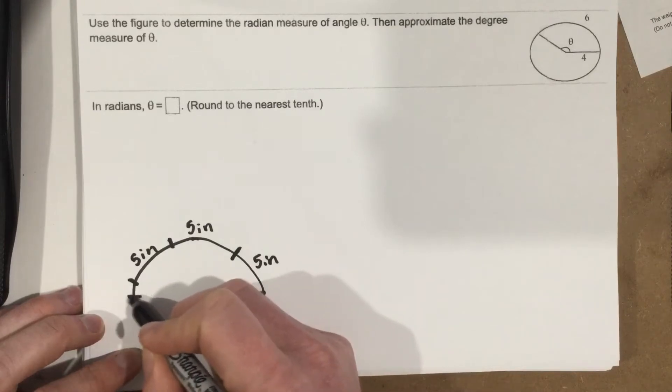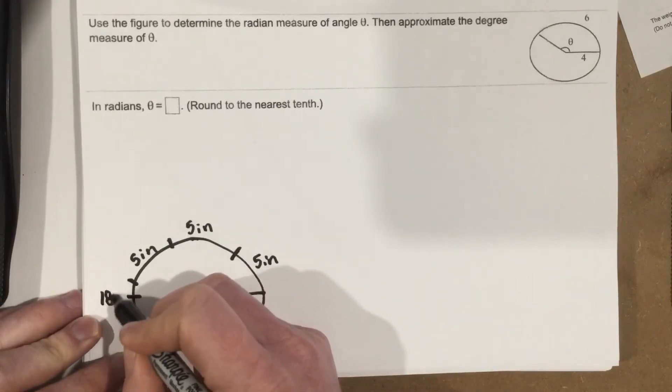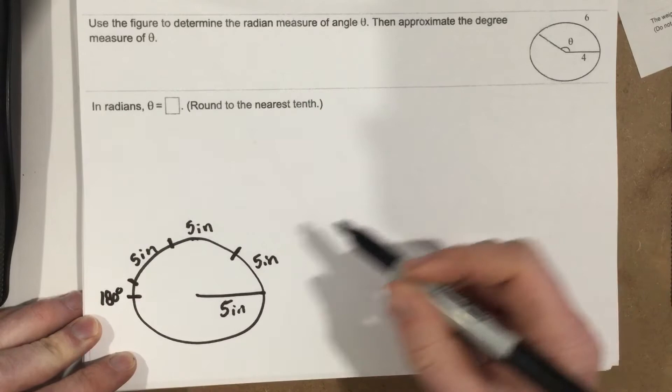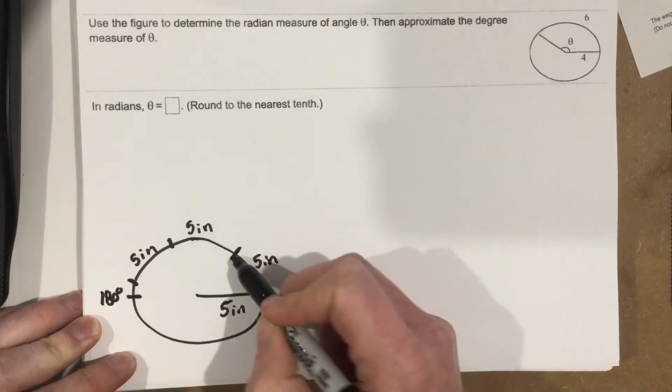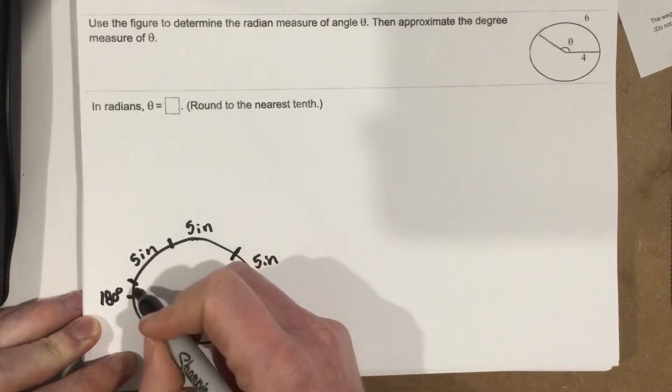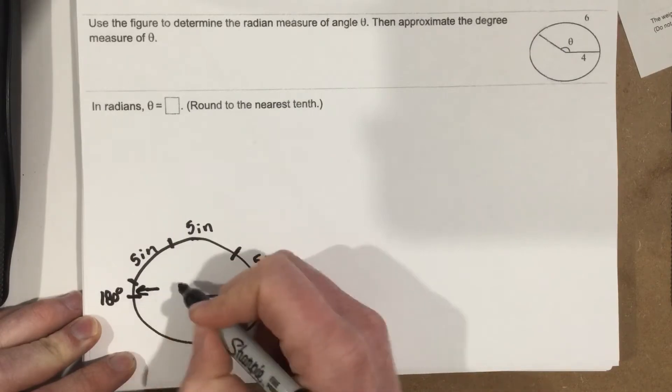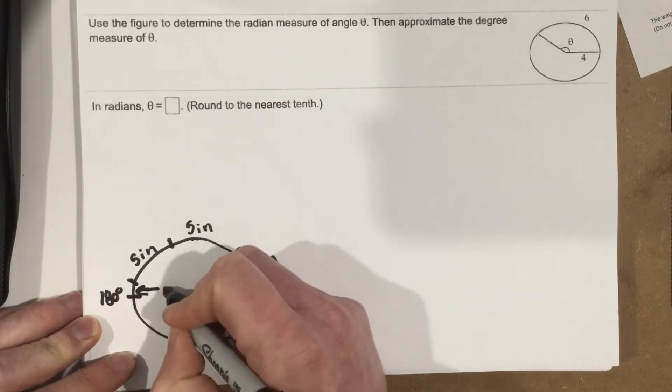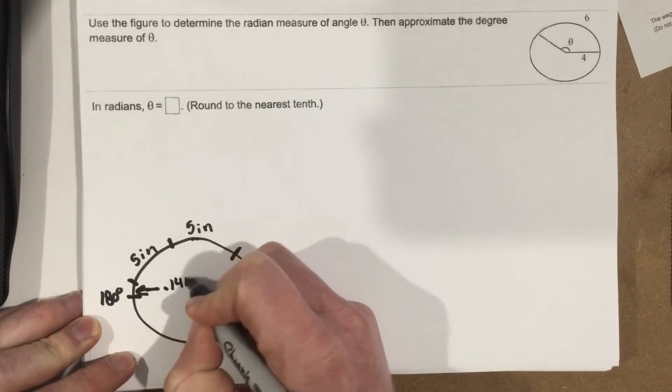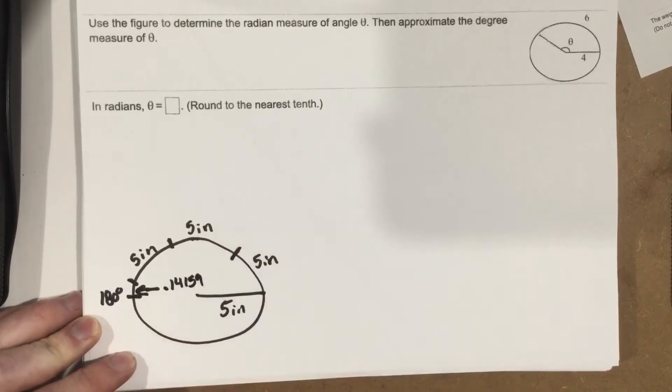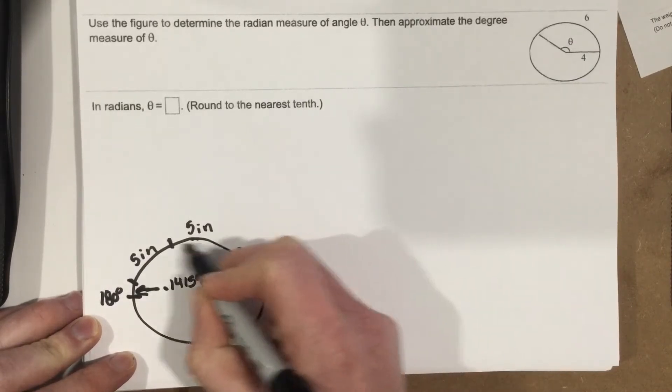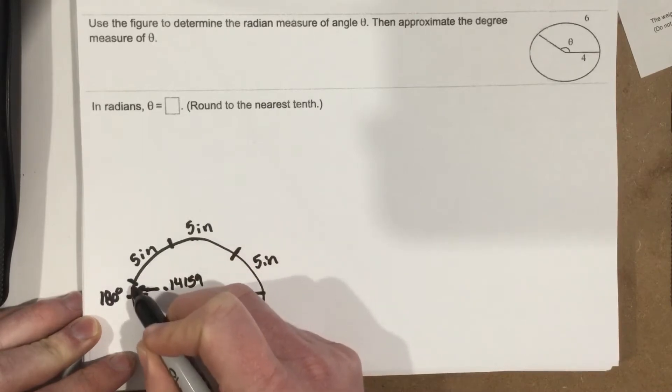Well, what's 180 degrees? Well, 180 degrees is actually 1, 2, 3. This little space right there is not a full radian, obviously. That is 0.14159 radians. So 1 radian, 2 radians, 3 radians, 0.14159.